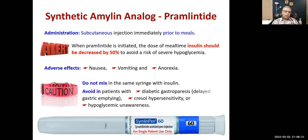We should not mix pramlintide in the same syringe with insulin. Cautions include avoiding it in patients with diabetic gastroparesis — where gastric motility is reduced due to damage to the vagal nerves from diabetic peripheral neuropathy — cresol hypersensitivity (an excipient used for stabilizing the drug), and hypoglycemic unawareness, because if the patient cannot recognize hypoglycemia it could turn into an emergency.